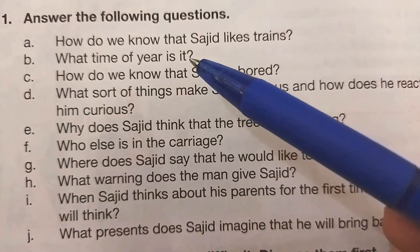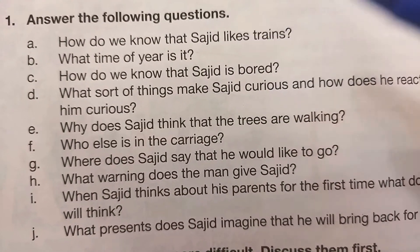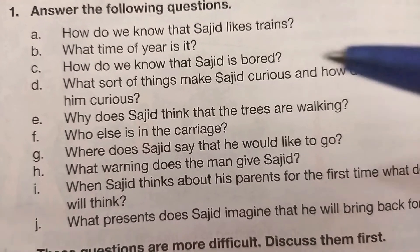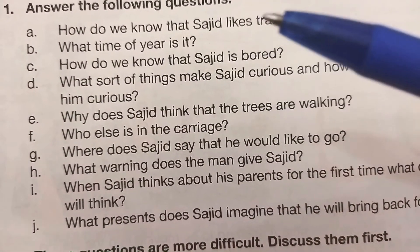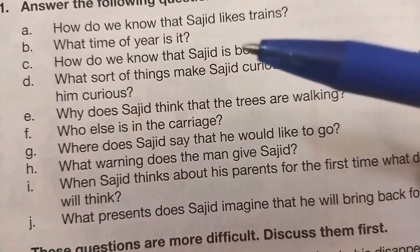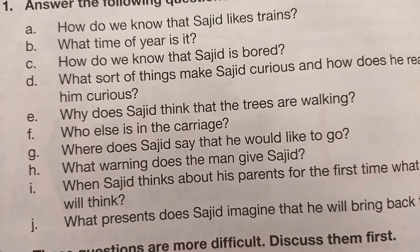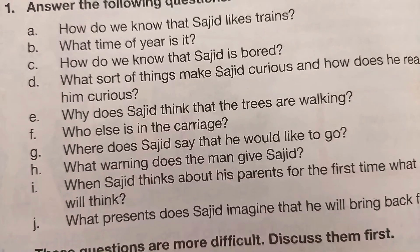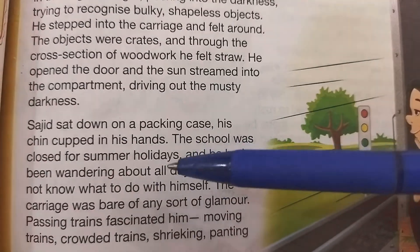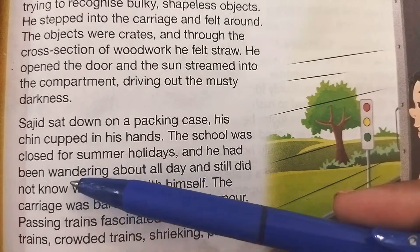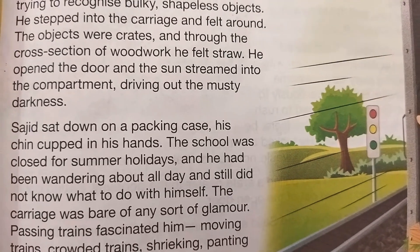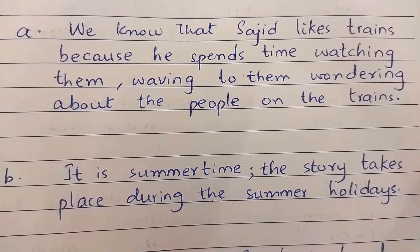Then we have a very interesting question that tests your intelligence — 'What time of year is it? Is it winter, summer, or rainy season?' In the last paragraph on page 39, the first page of the story, it tells us that school was closed for summer holidays. So we'll write: it is summertime — the story takes place during the summer holidays.